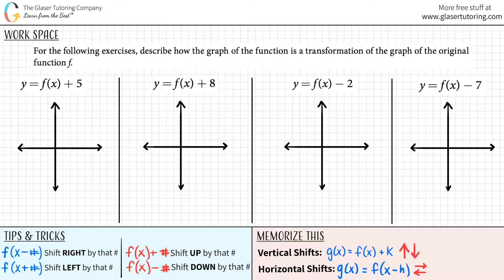For the following exercises, describe how the graph of the function is a transformation of the graph of the original function f. Okay, so we have four examples here, but they all are transformed off of the original function, which was f.